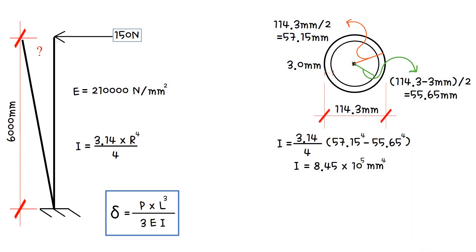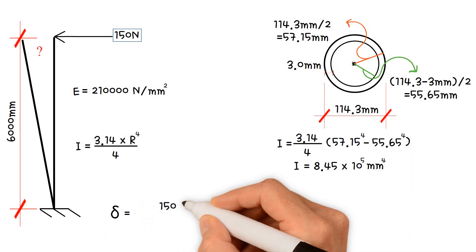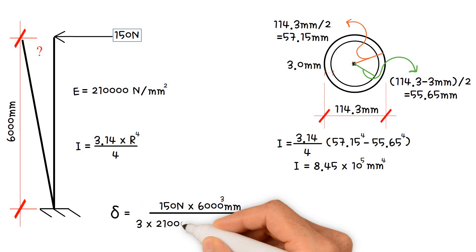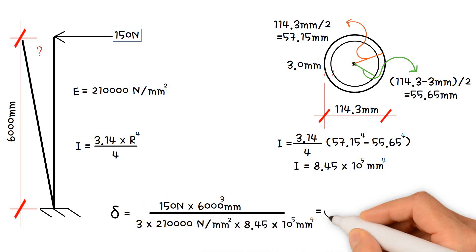Therefore, the lateral deflection equals 150 newtons multiplied by 6,000 millimeters to the 3rd divided by 3 times 210,000 times 8.45 times 10 to the 5. This results in a value of 61 millimeters.